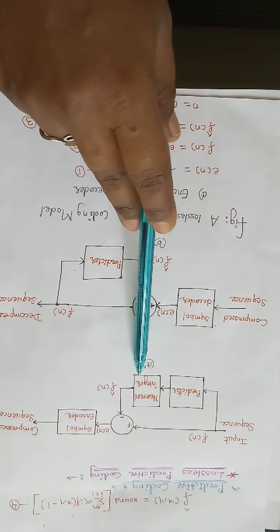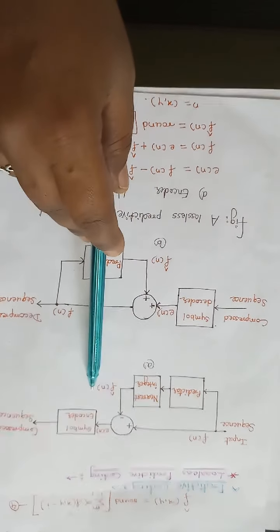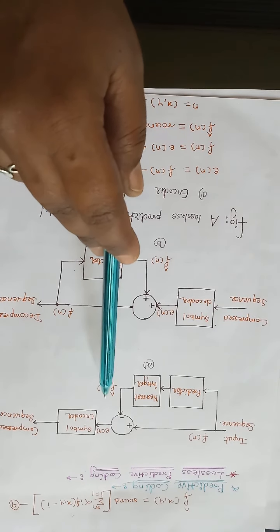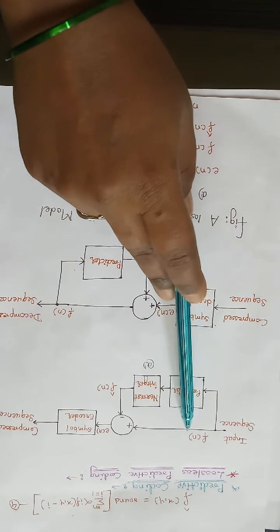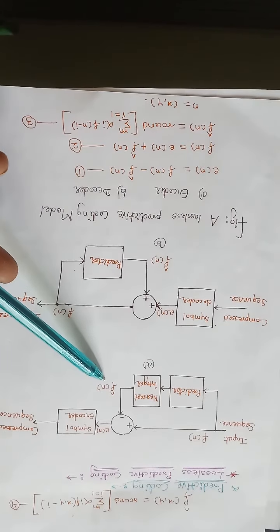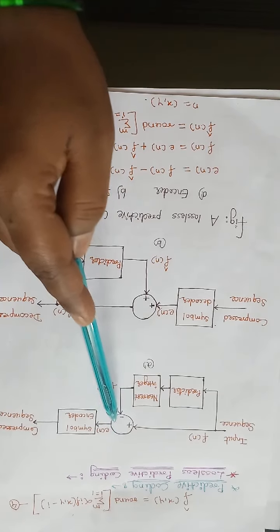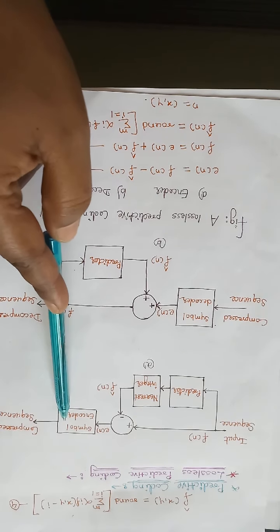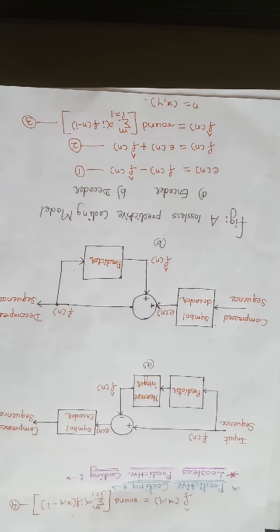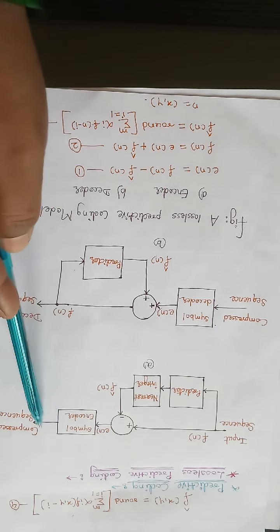The output of the predictor is rounded to the nearest integer value, denoted as F-cap of N, and it is used to form a difference or prediction error. E of N, the prediction error, is defined as F of N (the input sample sequence) minus F-cap of N. This E of N is then encoded using a variable length code by the symbol encoder to generate the next elements of the compressed data stream.